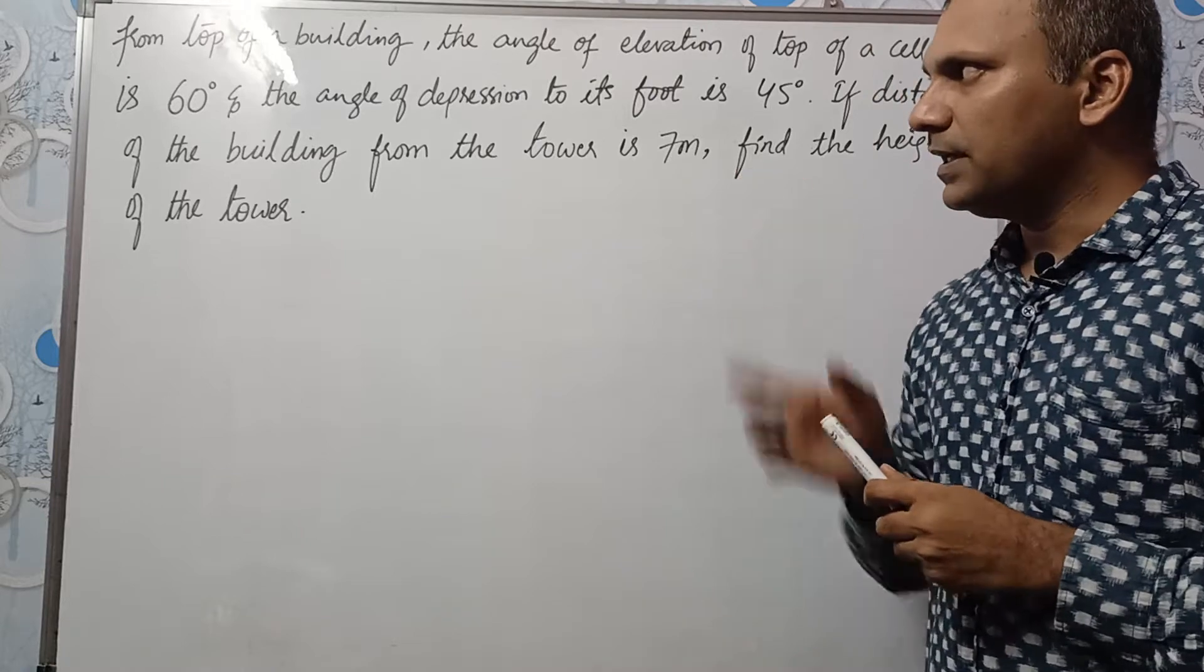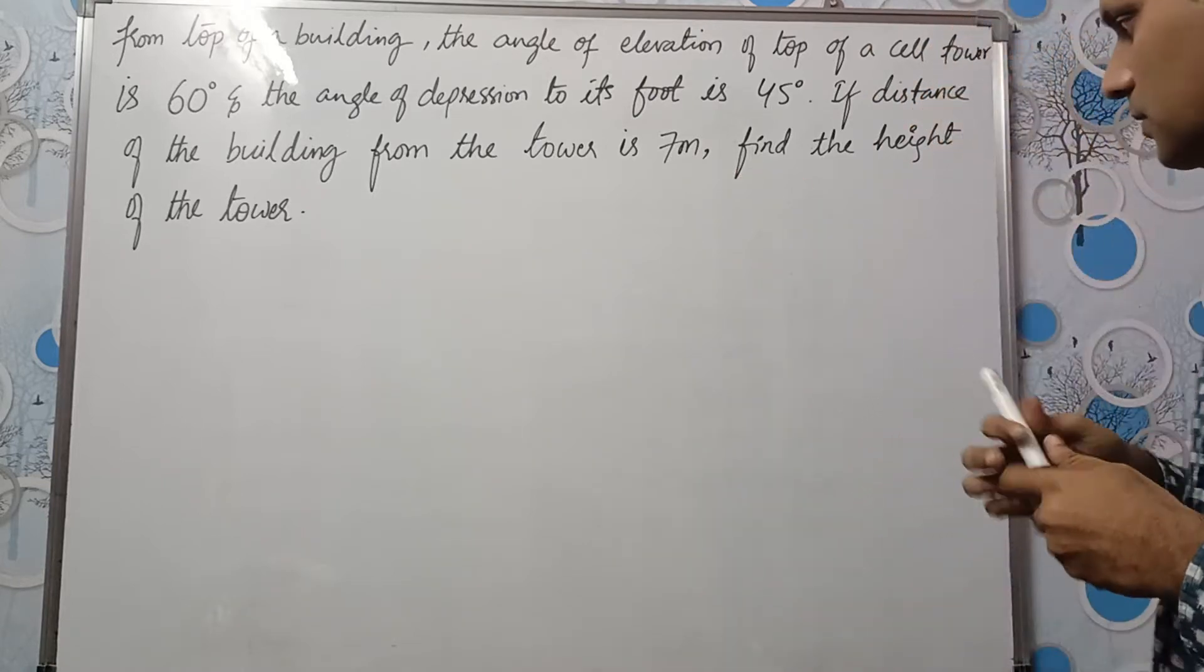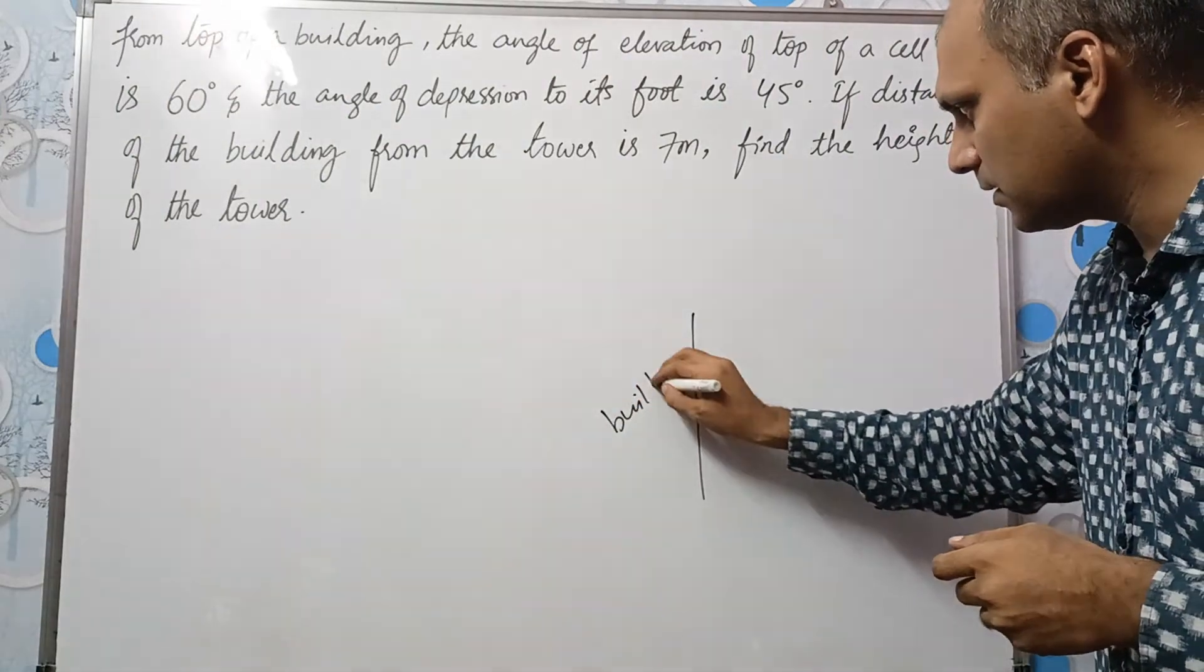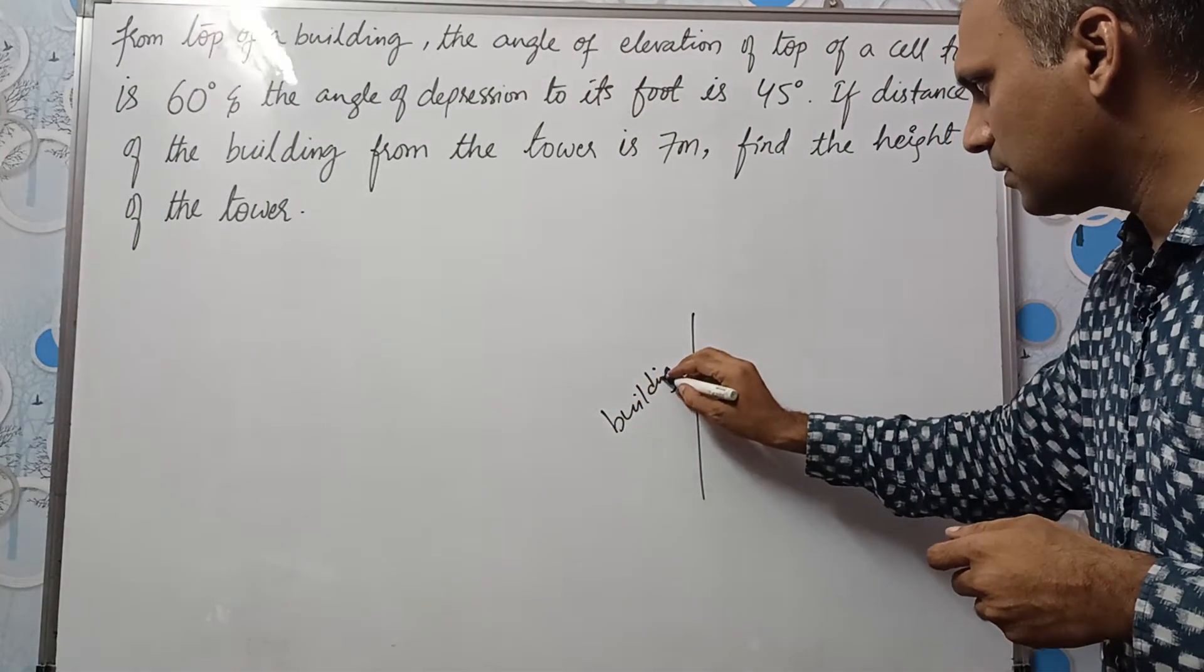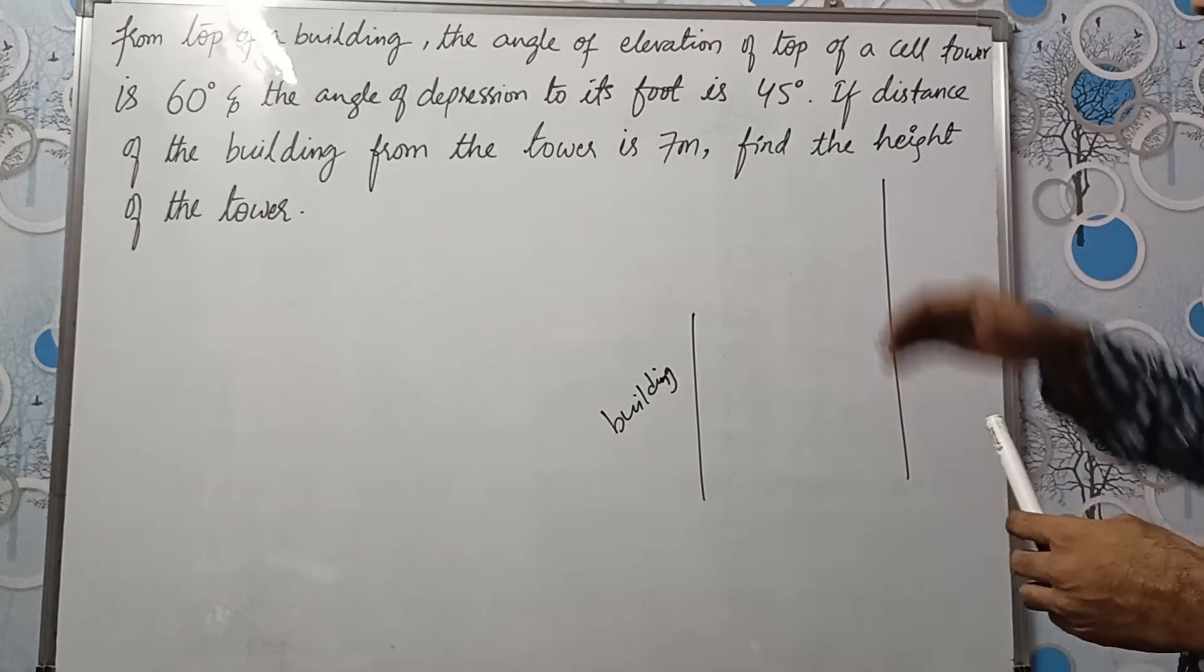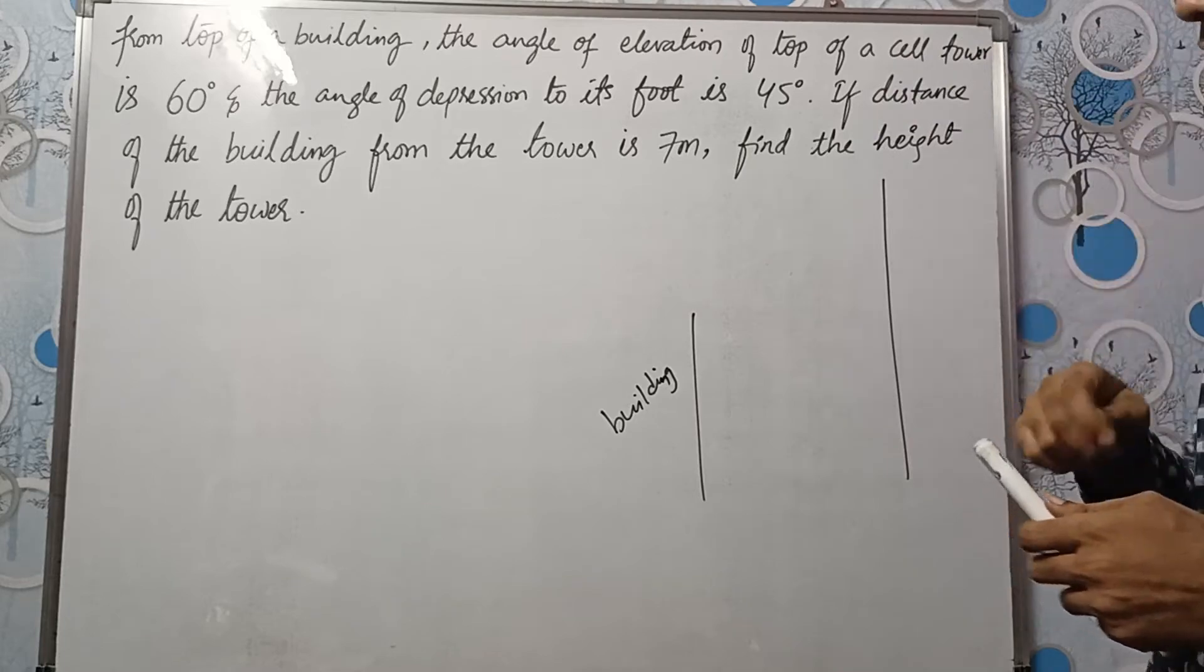So there is a building and there is a cell tower, right? See, suppose this is the building. And this is the cell tower. How can we say that cell tower is bigger than the building?